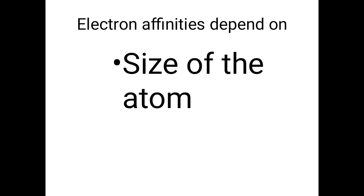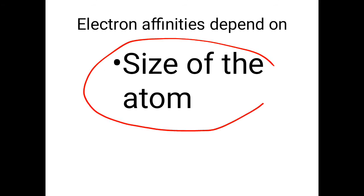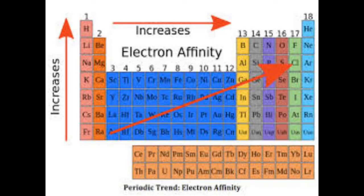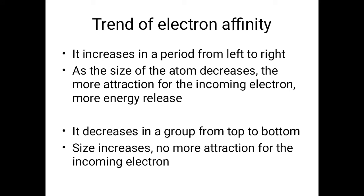The factor on which electron affinities depend is the size of the atom. Recalling the periodic table, the size of the atom increases down the group and decreases across a period from left to right. So electron affinity increases across a period from left to right because as the size of the atom decreases, there is more attraction for the incoming electron and more energy is released.